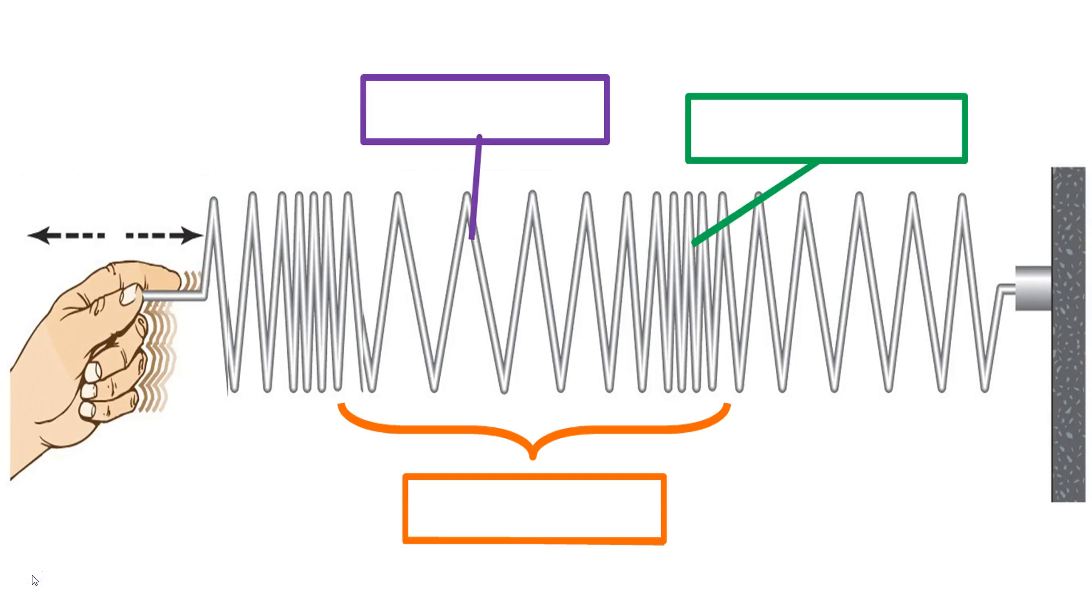Here is our sound wave, our compression, longitudinal wave. Let's label. This is a rarefaction - it's spread apart. It's rare that you would find an air molecule near there. Compression is when the air molecules are compressed together. The distance from compression to compression is our wavelength. This is an example moving through a string, but it's the same wave that moves through air.